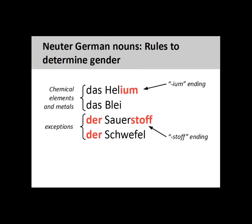Most of the chemical elements and metals are neuter, such as Helium and Blei, meaning Lead. Notable exceptions are nouns ending in -stoff, such as Sauerstoff meaning Oxygen, and a few other elements and metals such as Schwefel, meaning Sulphur. A good rule to follow is that if the noun ends in -ion, it will be neuter.